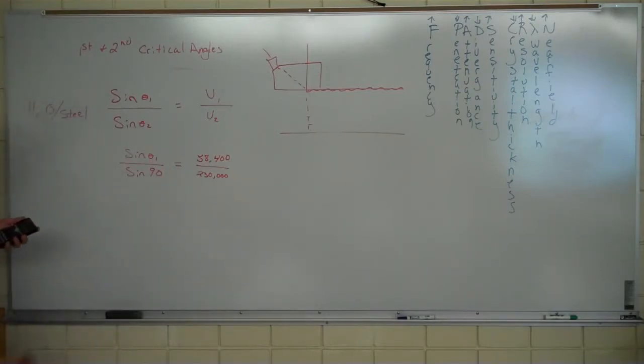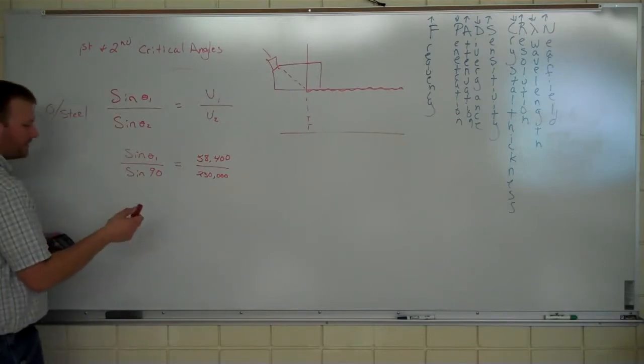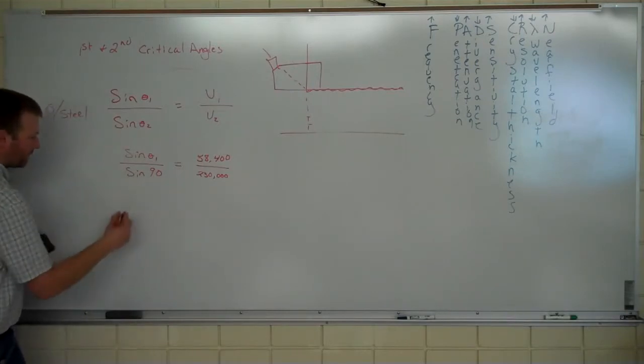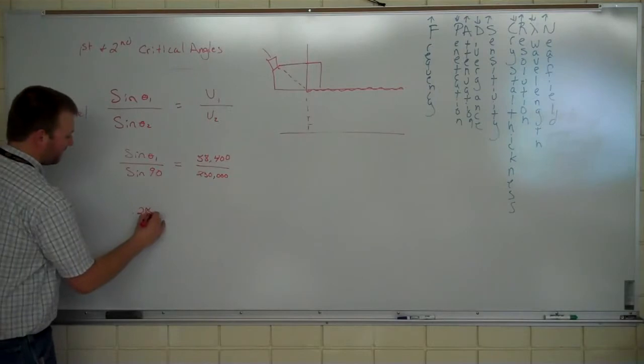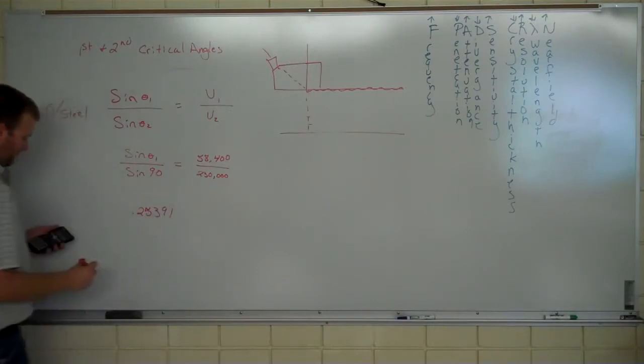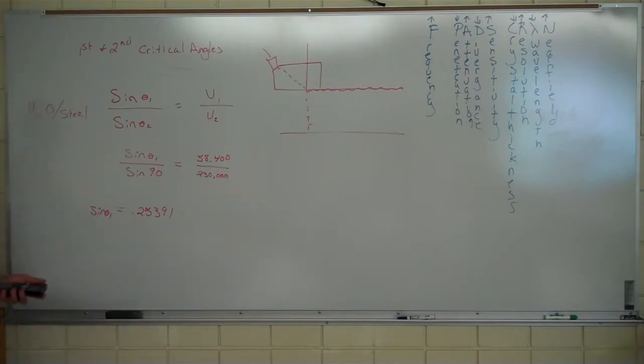So one, sine of 90 times 58,400, cross multiply and divide by 230,000. 0.25391. 0.25391, if we stretch it out a little ways. So all that worked out as 0.25391, and that equals the sine of angle one. So that's the answer?